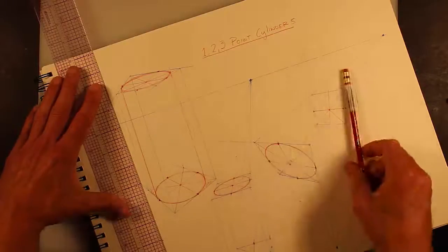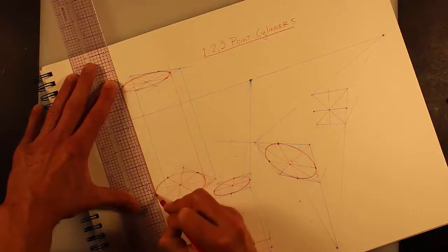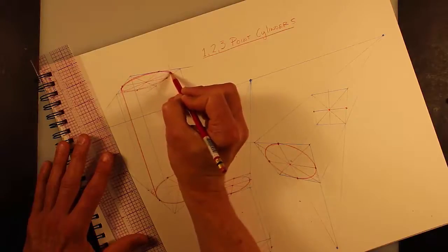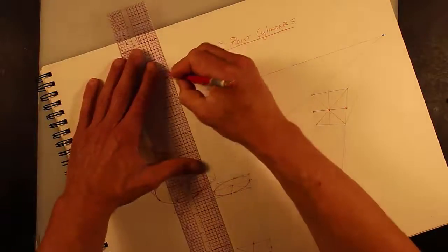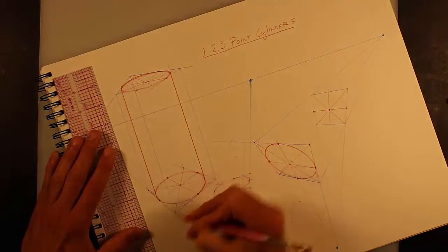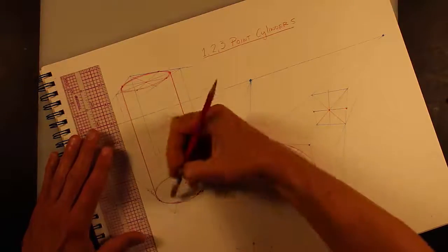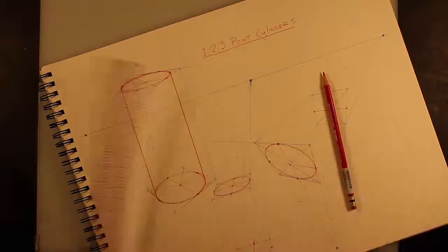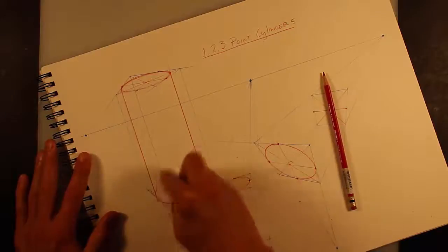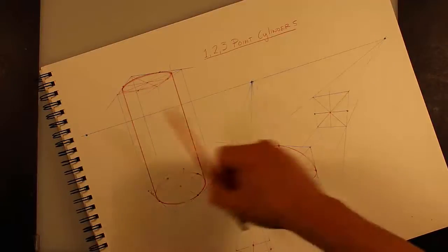And then once you get to here, you really want to emphasize the object lines, which are the lines that would be visible if it was a solid object. So there, to there, to there, to there. And then you can lighten. If they're dark, these aren't bad, but the ones behind slightly, not a lot. I like to see the construction. So that would be that.